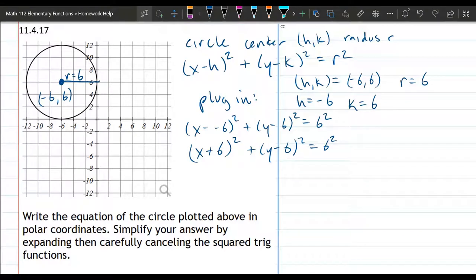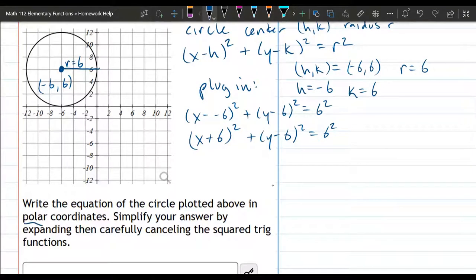Okay, so we have an equation for this circle, but it's in Cartesian. It's in x and y coordinates. We need to turn it into polar coordinates. And the way we're going to do that, x is r cos theta, y equals r sine theta, and then sub these in.